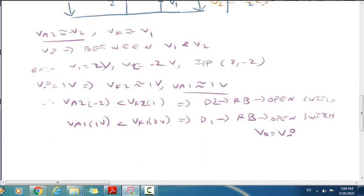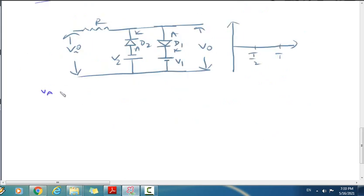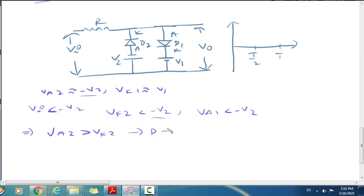The last condition is when input is less than the negative reference voltage minus V2. Circuit voltage VA2 is approximately minus V2, VK1 is approximately V1. When input is less than minus V2, the cathode will be approximately less than minus V2. VA2 is greater than VK2, so diode D2 is forward biased and acts as a closed switch.